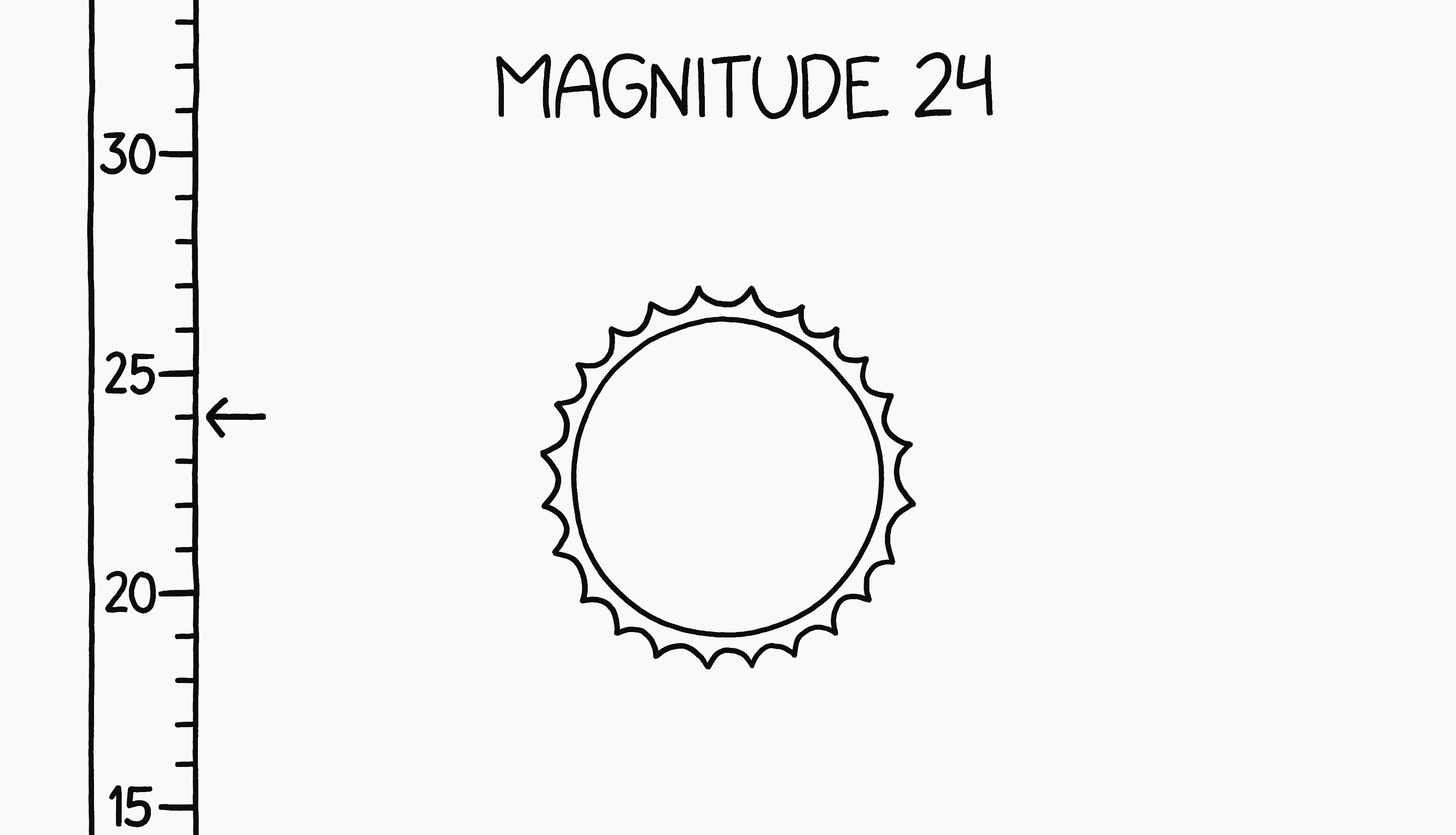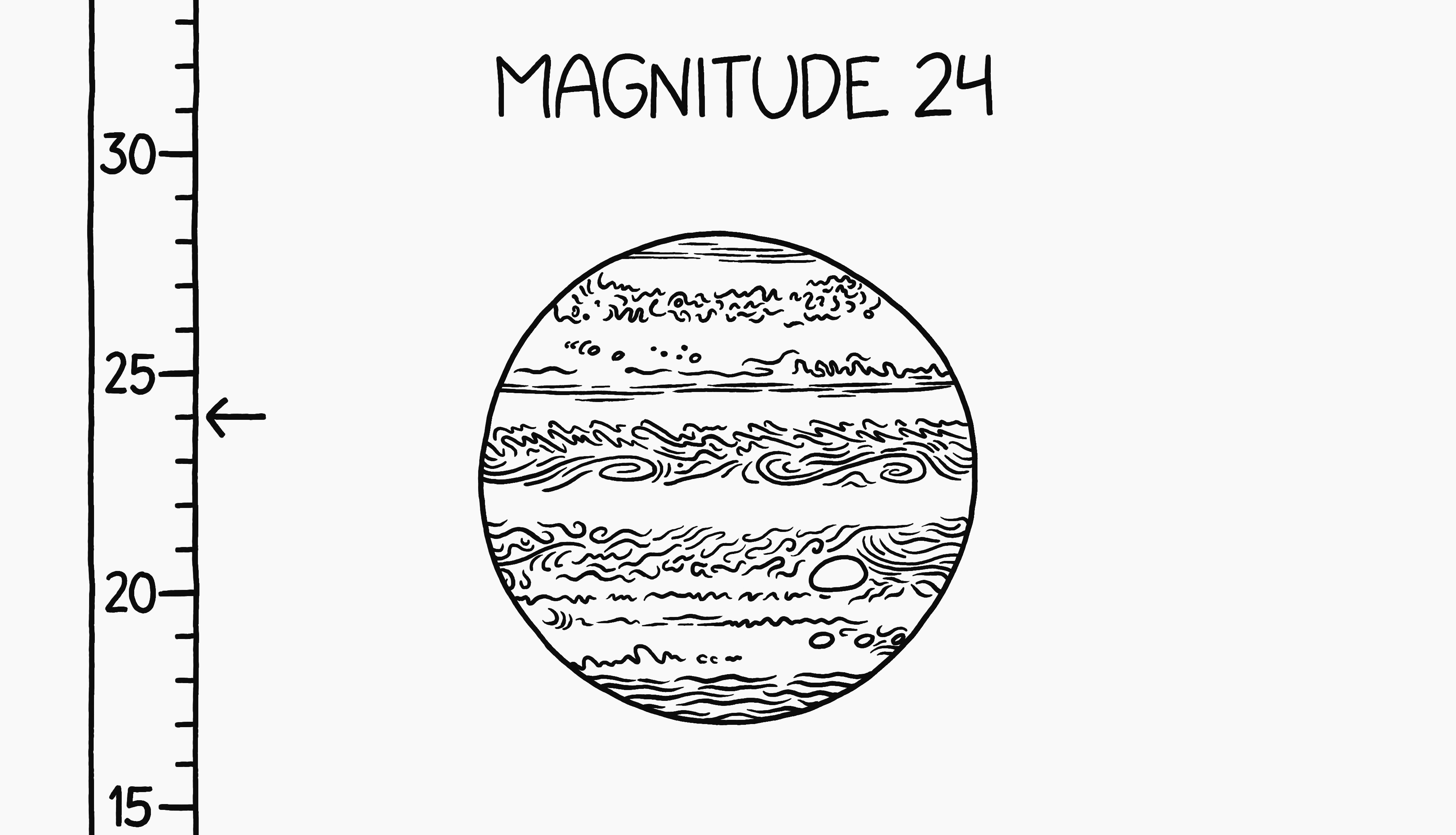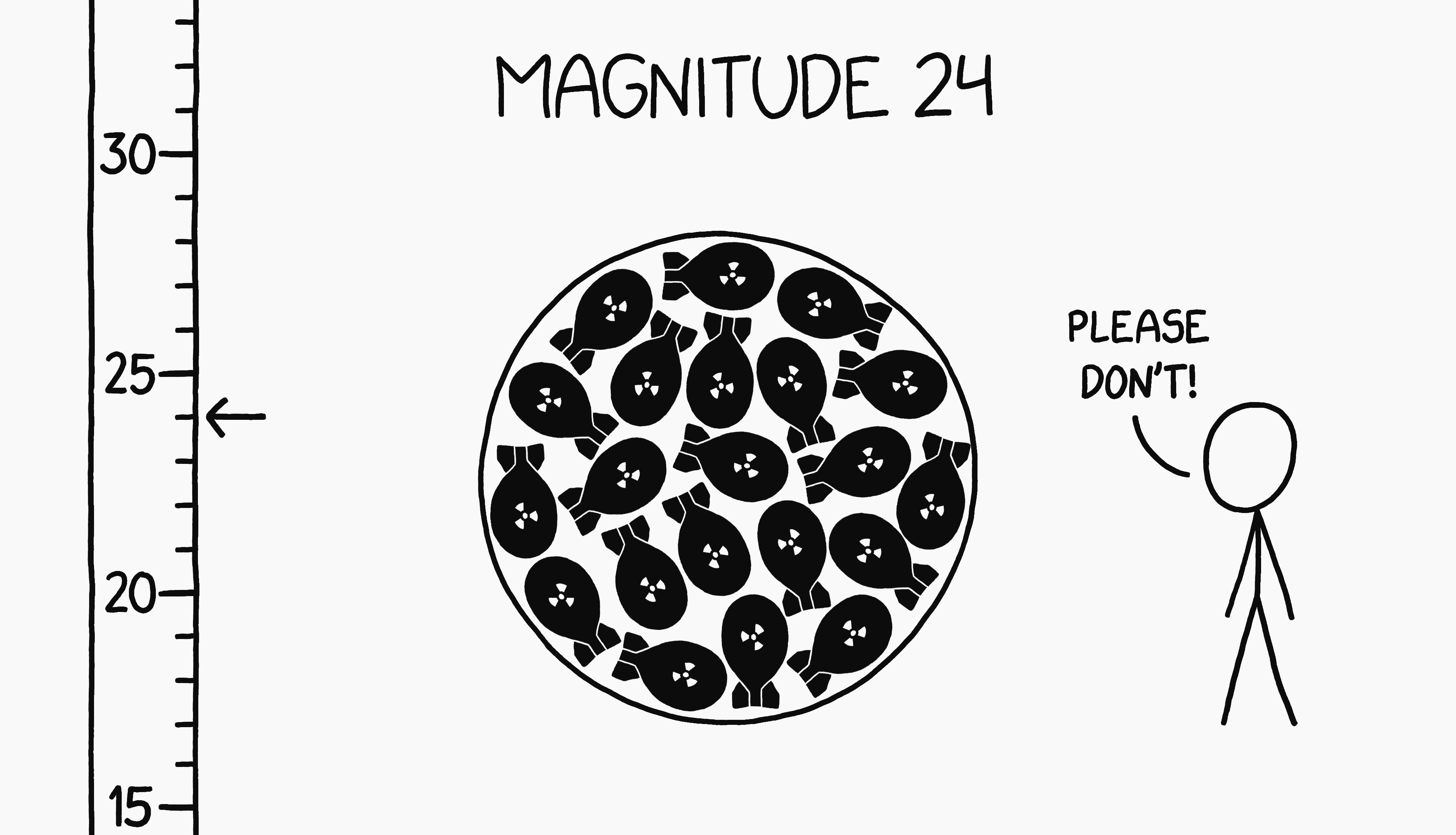The Sun, with its higher gravitational binding energy, could have up to a magnitude 24 quake. This is about the energy release you would get if you packed the entire volume of Jupiter with hydrogen bombs and detonated them all at once.